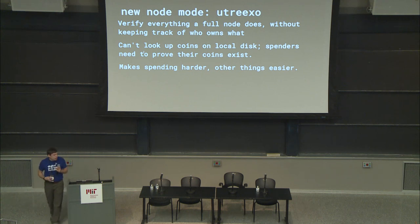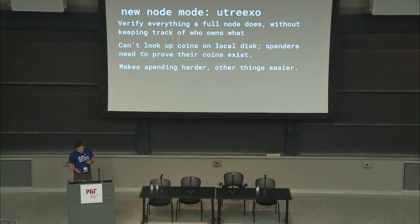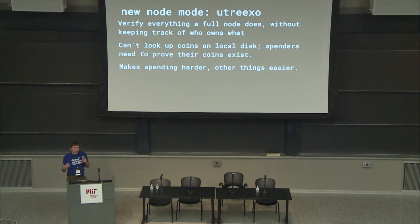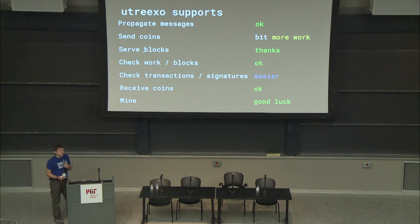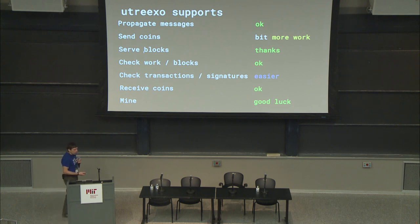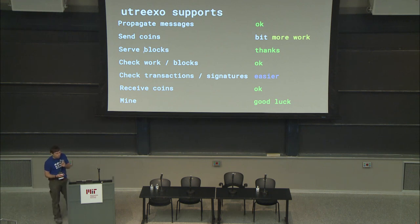The research I've been doing is Utreexo. The idea is it's a new mode where it's a full node — fully verifying — but it doesn't actually keep track of who owns what. It keeps a very compact representation and doesn't have an index of all the different UTXOs, so it can't look up coins on disk. People spending coins need to prove that their coins exist. So it makes spending a little harder and other things easier — you can still propagate messages and send coins, but sending now requires proving your coins exist.